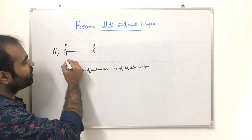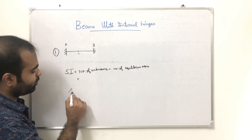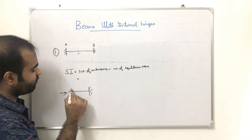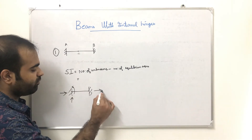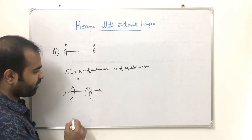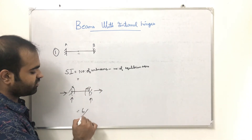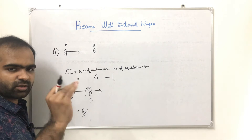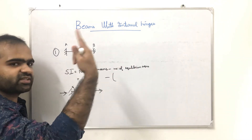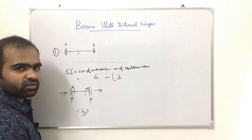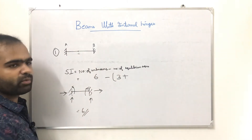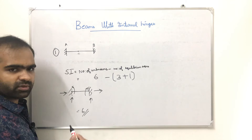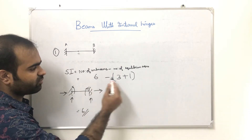Let's check this case. We have a fixed support, which gives vertical force, horizontal force, and rotation — that is 3 reactions. Here it is 3, and here it is 3, giving a total of 6 unknowns. Equations of equilibrium: sigma FH = 0, FB = 0, M = 0 — that is 3 equations, plus the hinge moment sigma M = 0, giving 3 plus 1 = 4 equations. Static indeterminacy is 6 minus 4 = 0.